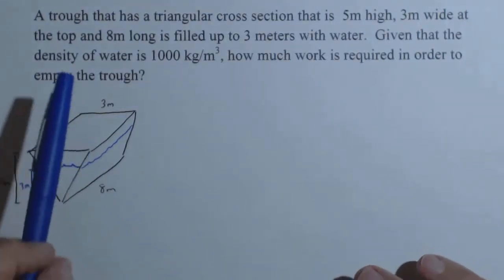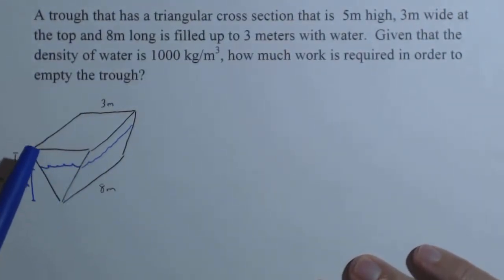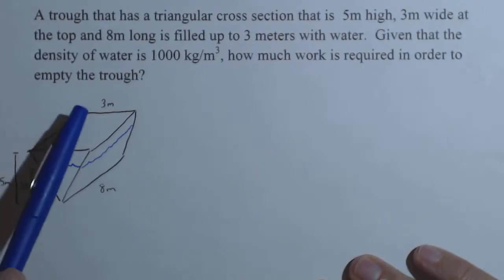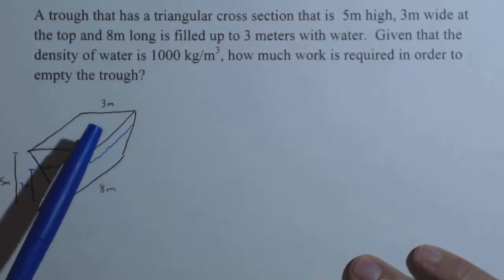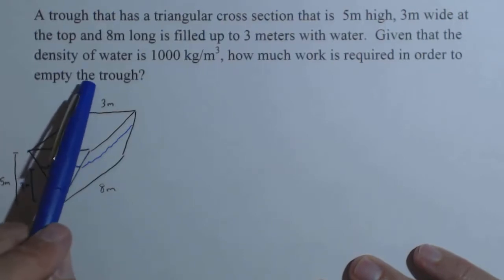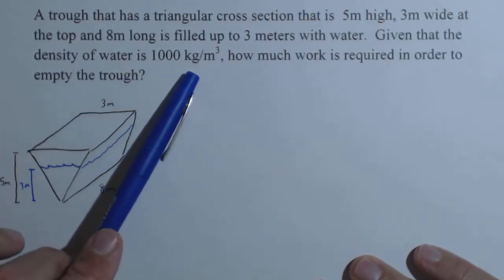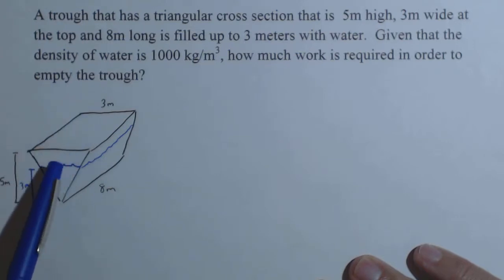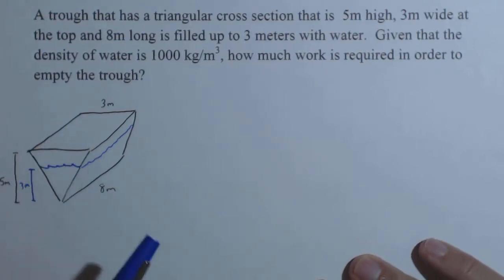In this video, we have a trough with a triangular cross section that is 5 meters high, 3 meters wide at the top, and it's filled up to 3 meters with water. The density of the water we are given, and we want to know how much work is required to empty the trough through the top.